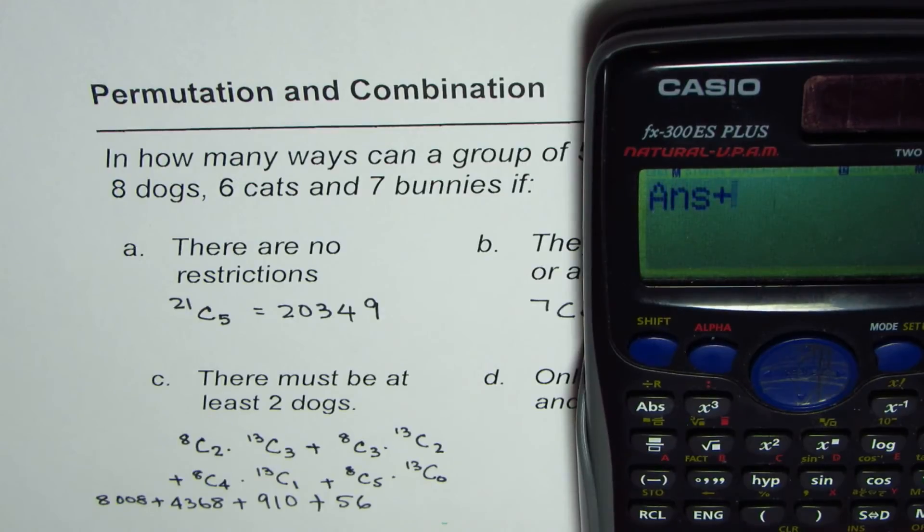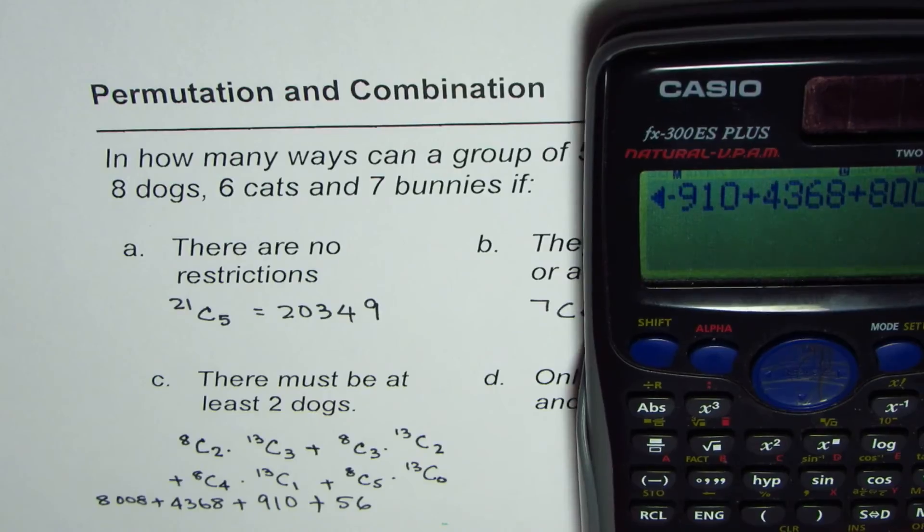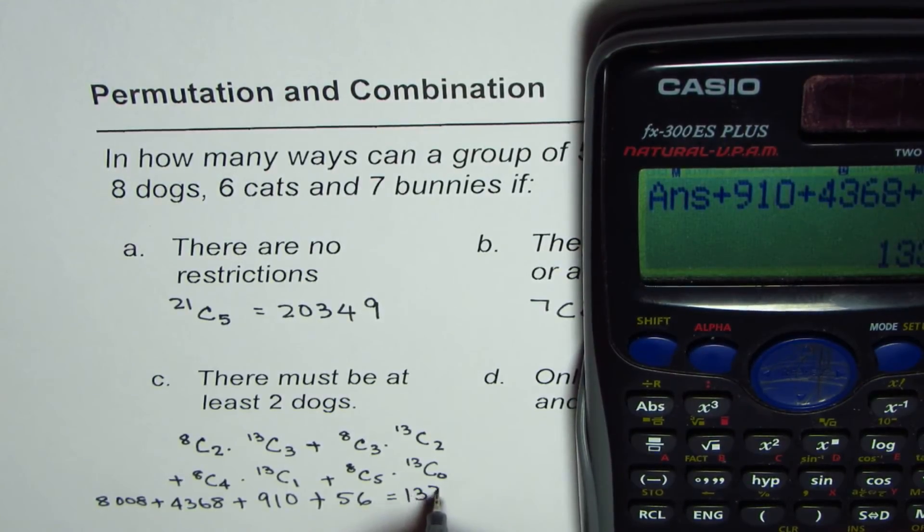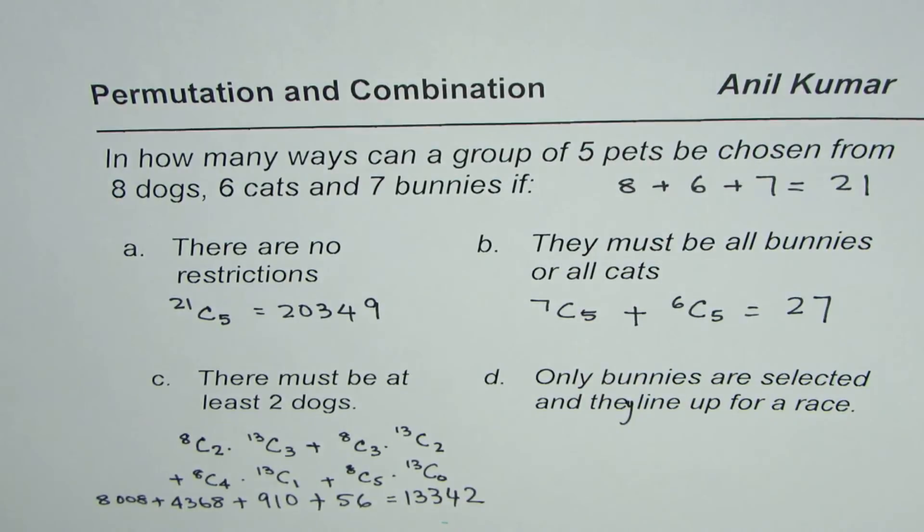Now we can add them all. So 56 plus 910 plus 4368 plus 8008 is equal to 13342. So that becomes the answer for this part.